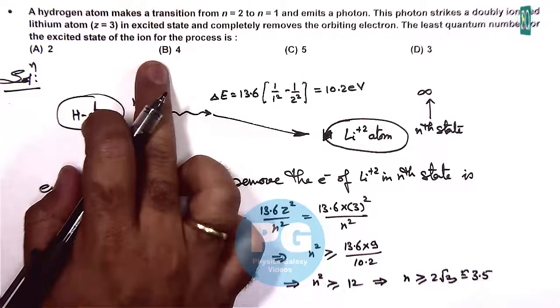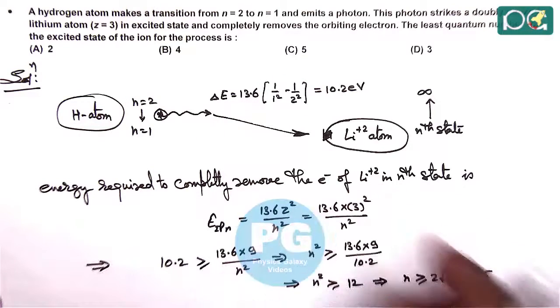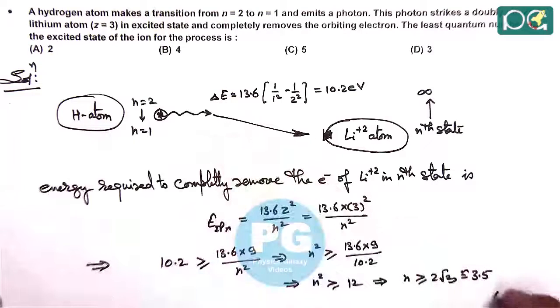In the case of options B and C, when n is 4 or 5 is possible. So the least quantum number here would be 4. The answer to this question is option B.